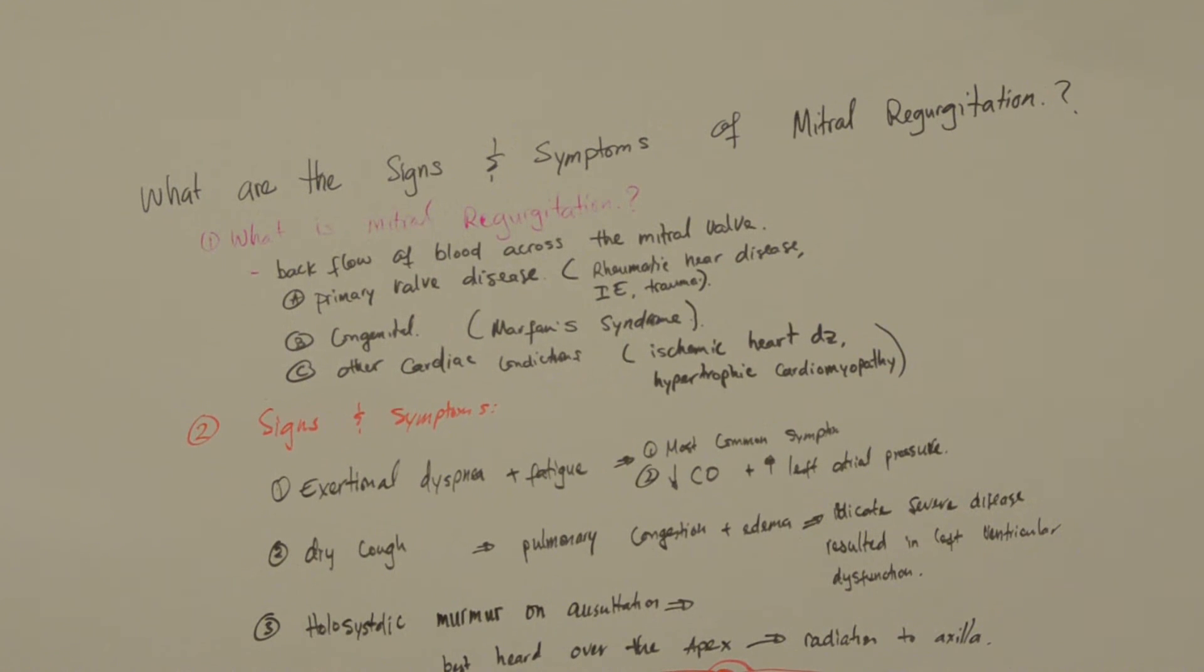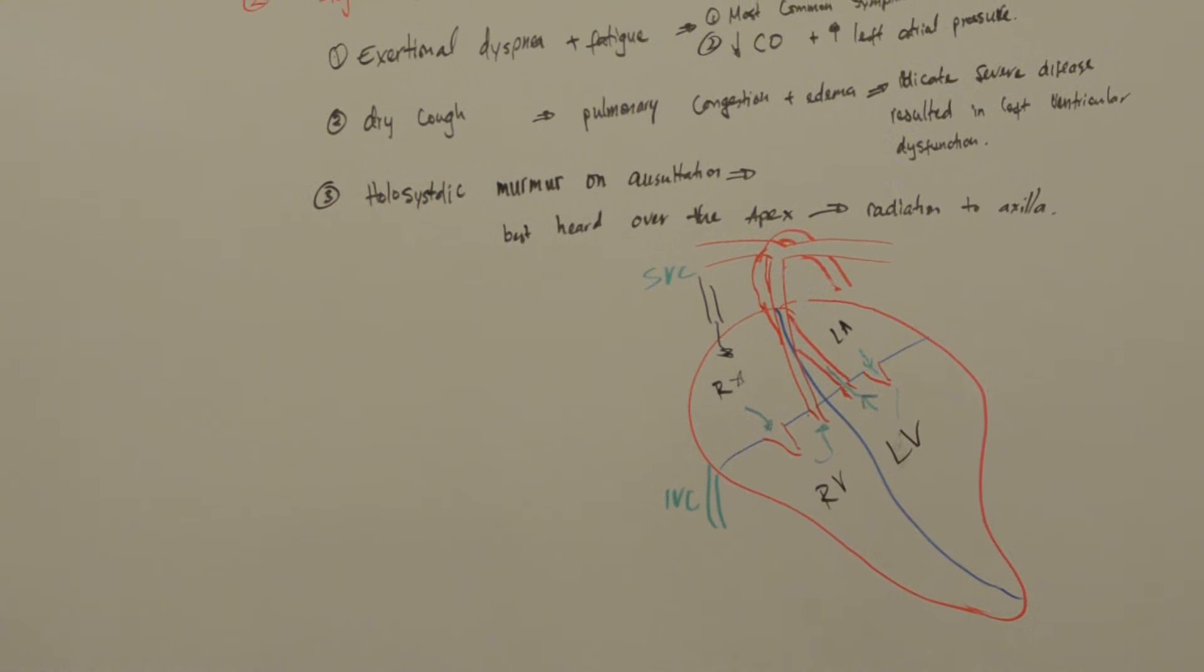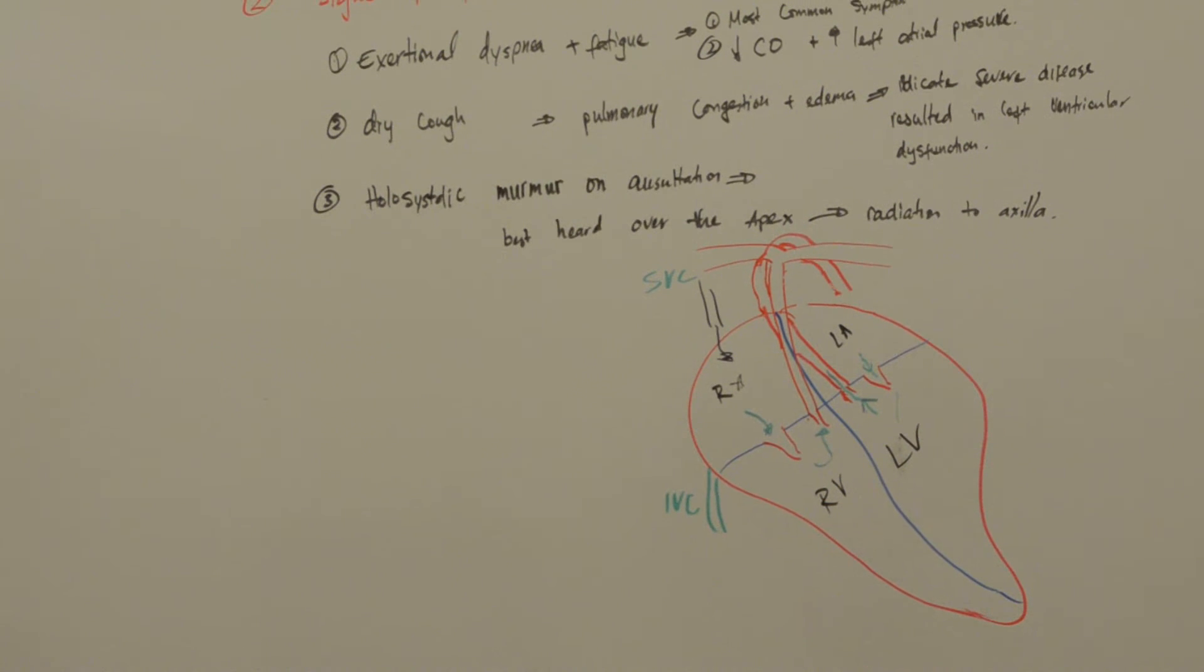What are the signs and symptoms of mitral regurgitation? Mitral regurgitation is the backflow of blood through the mitral valve, which is located between the left atrium and the left ventricle.